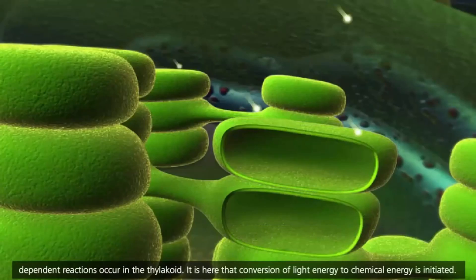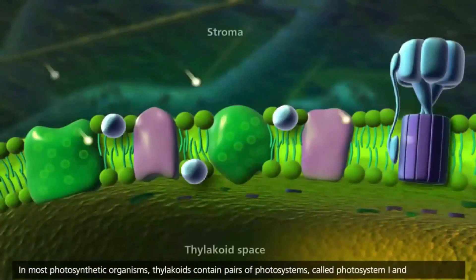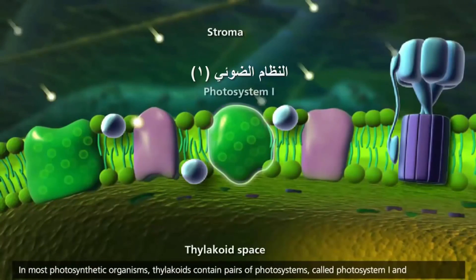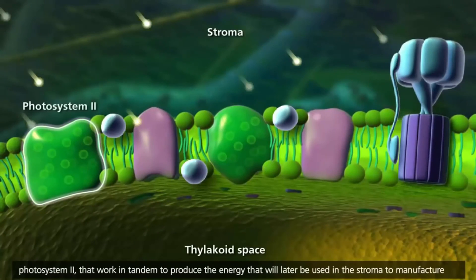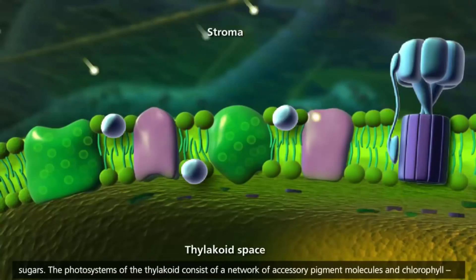It is here that conversion of light energy to chemical energy is initiated. In most photosynthetic organisms, thylakoids contain pairs of photosystems, called Photosystem I and Photosystem II, that work in tandem to produce the energy that will later be used in the stroma to manufacture sugars.